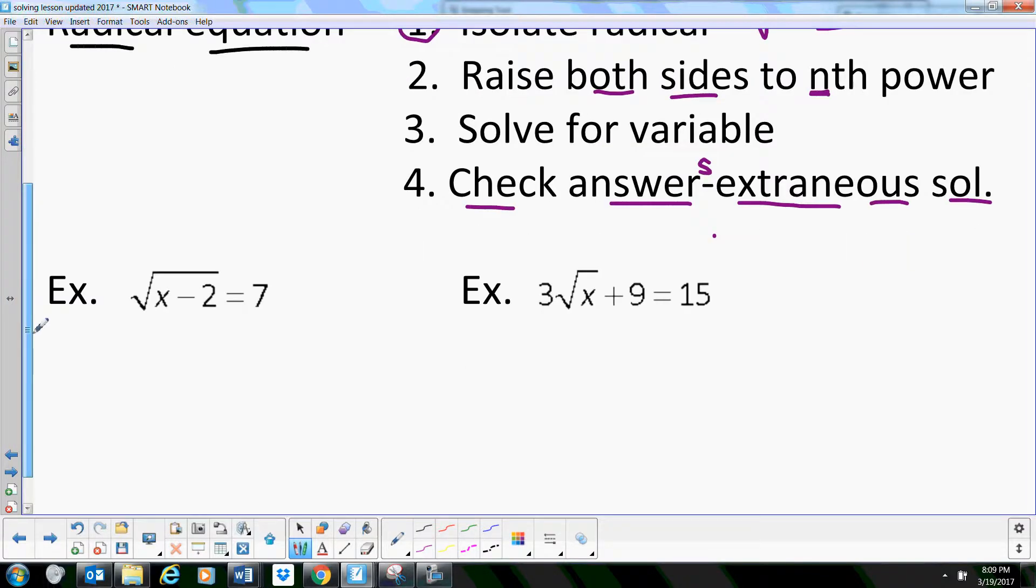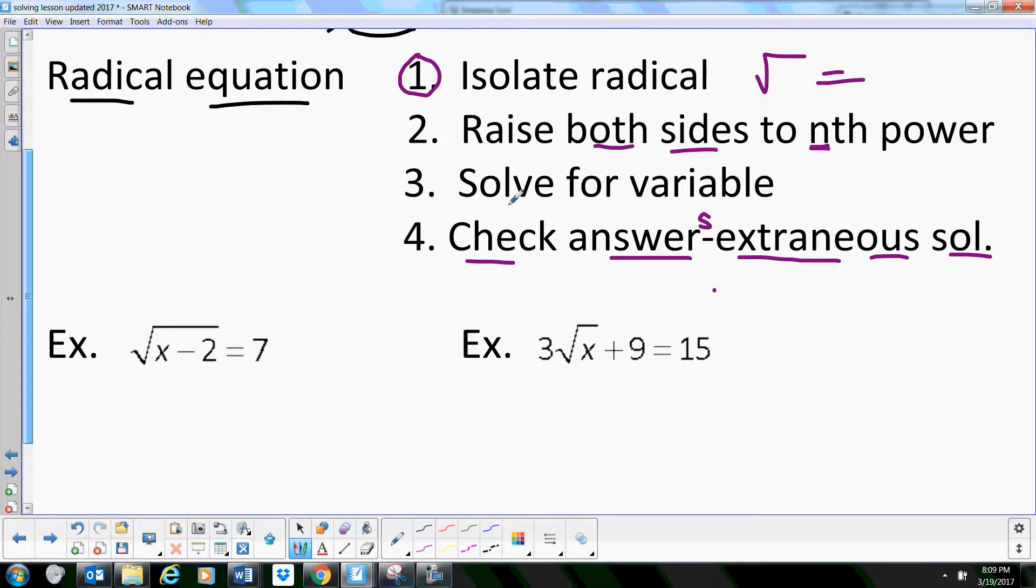Let's try one here. Our first example: we want to isolate the radical. Well, this radical is already isolated, so all we have to do is raise both sides to the nth power. Since this is a square root, we're just going to square both sides. The square and the square root cancel, and you end up with x minus 2 equals 7 squared, or 49.